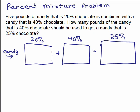Here's our picture. Let's pretend we have three bags of candy - two bags that we're going to pour into a big bag. In the first bag, 20% of it is chocolate. We can write that as a decimal, 0.20, and 40% would be 0.40, and 25% is 0.25.